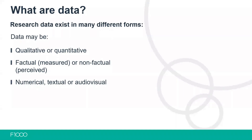When we're talking about data, it can take many different forms. Especially if we're thinking about humanities and social sciences, it might not be necessarily obvious what the data is. Data can be qualitative or quantitative — if you were conducting a survey, the written answers count as qualitative data, while quantitative is more numerical data. Data can also be factual or non-factual, and numerical, textual, or audio-visual. Anything that is created from or is the output of your study will be considered as the data.